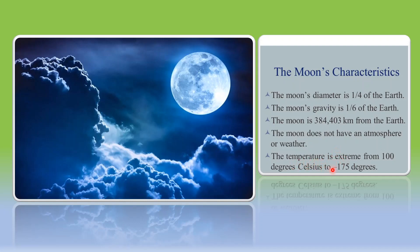The temperature of the Moon is very extreme — 100 degrees Celsius when it is facing the Sun, and minus 175 degrees Celsius on the part not facing the Sun. Since there is no atmosphere to protect the Moon from falling meteors, that is why we see a large number of huge depressions on the surface of the Moon.